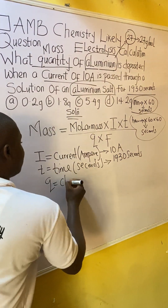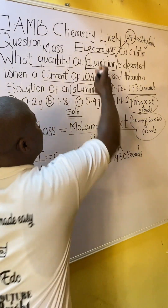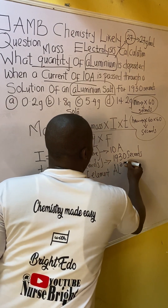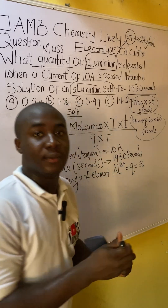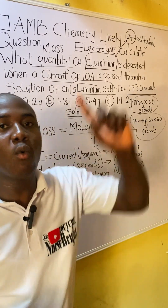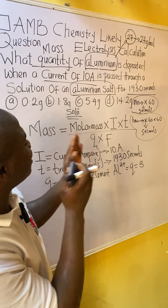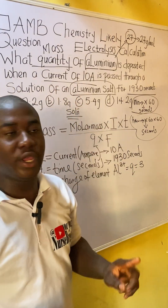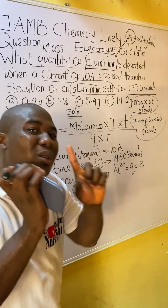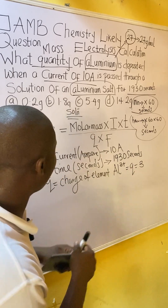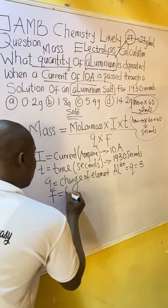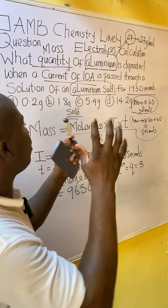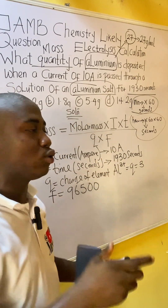Q has to do with the charge of the element, which is aluminum. Aluminum has a +3 charge, so Q becomes 3. Make sure you watch my full video lesson on electrolysis to learn common elements and their charges, as the JAM exam normally tests these every year. F is the Faraday's constant, which is 96,500 coulombs. Now we have every single thing we need to solve this question.